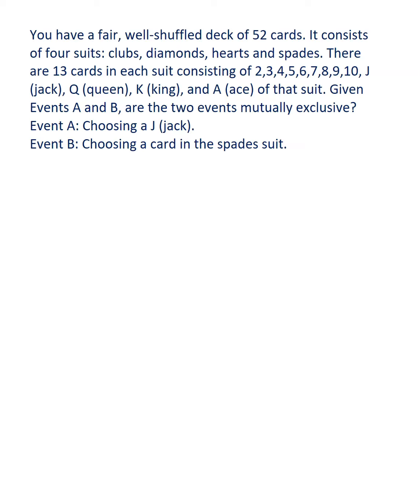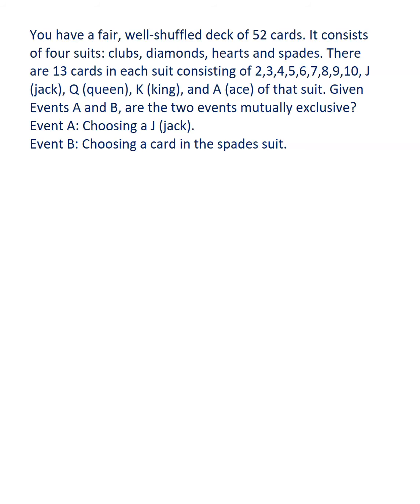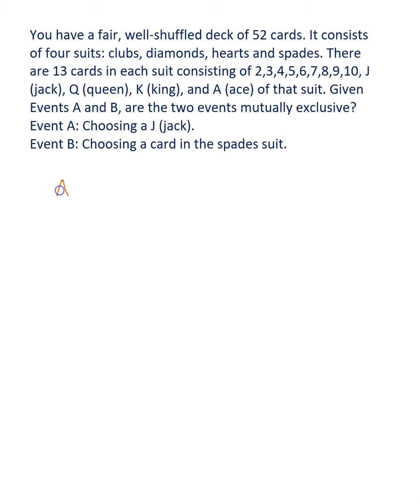Given events A and B, are these two mutually exclusive? Event A is choosing a Jack, event B is choosing a card in the spade suit. Event A — choosing a Jack — we can have Jack of Clubs, Jack of Diamonds, Jack of Hearts, and Jack of Spades.